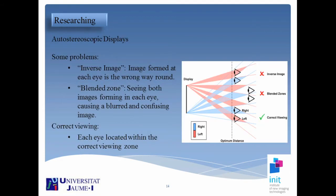As with many recent techniques, at the beginning there are many problems with using it. An interesting point is that the current viewing is only correct at an optimal point — seeing the 3D can be difficult depending on the distance and position of the viewer. The typical problems we are having are the inverse image — where the image formed at each eye is the wrong way round — and the blended zone, when both images form in each eye producing a blurred and confusing image.